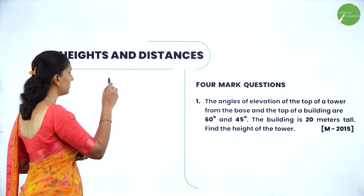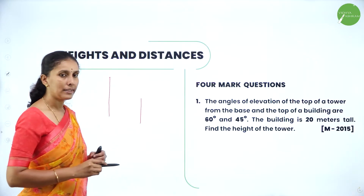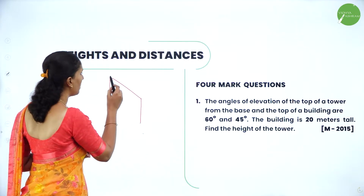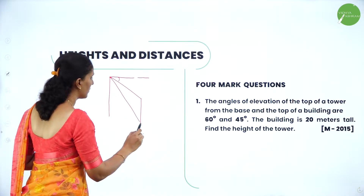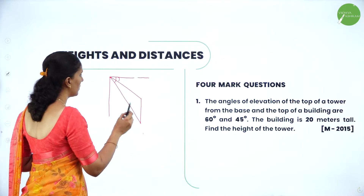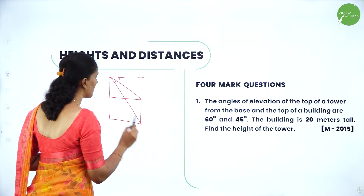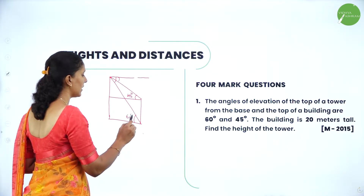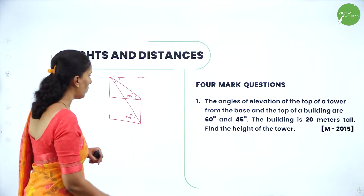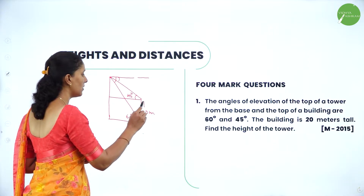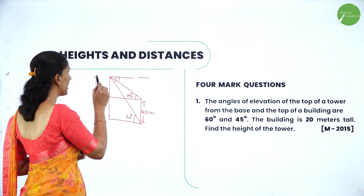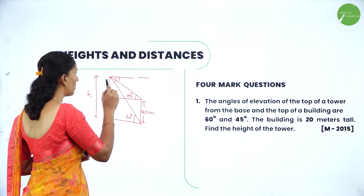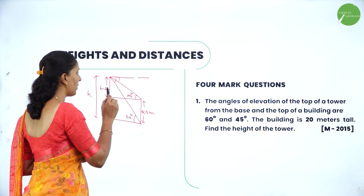So here we have a tower and a building. Consider a person standing there — when you see the top of the tower from the base and top of the building, these are the angles of elevation. I will draw two lines which are parallel to each other, forming a base. This angle is 45 degrees and this angle is 60 degrees. The building is 20 meters tall, so the height of the building is 20 meters. Let me take the height of the tower as H. Since these two parallel sides are equal, this height is also 20, and the remaining height is H minus 20.